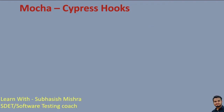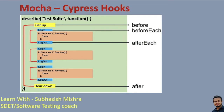Let me explain more. In Cypress, we have four different kinds of hooks: before, before each, after each, and after. So there are four different kinds of hooks available in Cypress. We will see in detail what these hooks are and how we can use them. Inside the describe block, we write the test suite, and inside the test suite we have multiple test cases — multiple IT blocks. Here we have three test cases in one test suite: TC01, TC02, and TC03.